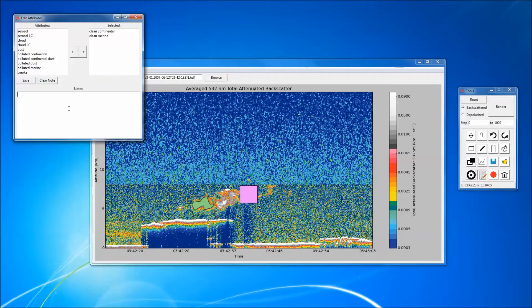Polygons can assign attributes and nodes. These can help researchers identify and track the movement of aerosols or clouds in the atmosphere.